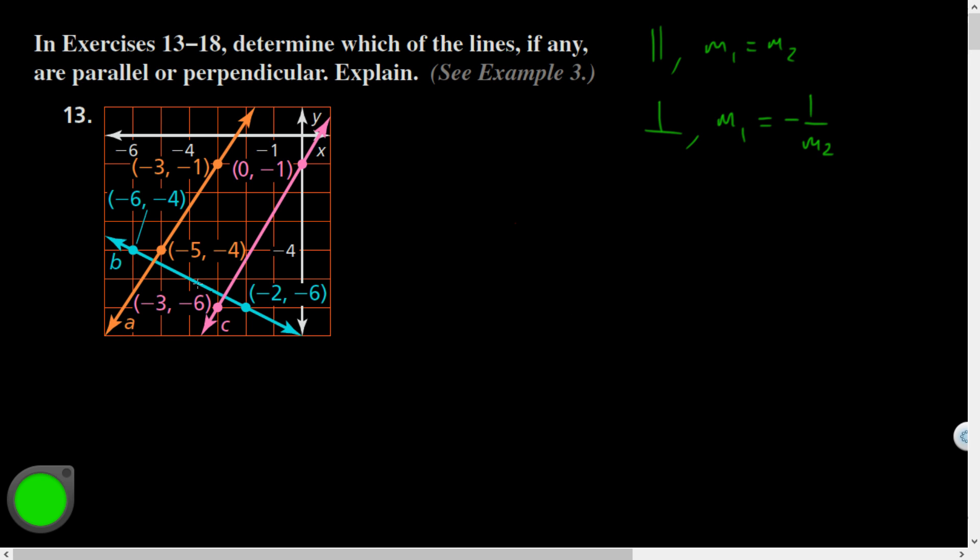If that notation doesn't help you, don't worry, let's just jump right in. So let's find the slope of this orange line. So the slope rise over run, although I could also have used slope formula. Looks like it's going up three over two. So the slope of the orange line, m sub a, is equal to three over two.